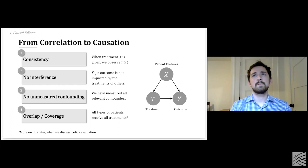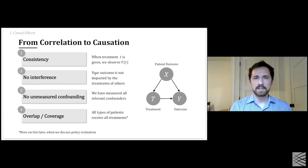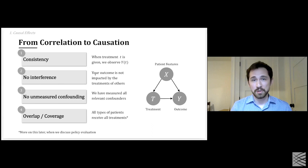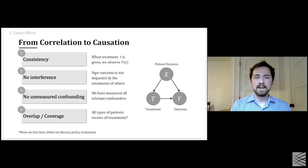Interference is another concern. In the context of treating cancer with chemotherapy, the treatment I give you is likely all that matters — the treatment given to others doesn't impact your outcome. But in the context of an infectious disease, if I had a vaccine and gave it to everyone except you, that would probably have an impact on your chance of catching the disease even though I didn't treat you directly. For our setting, we'll assume consistency and no interference.